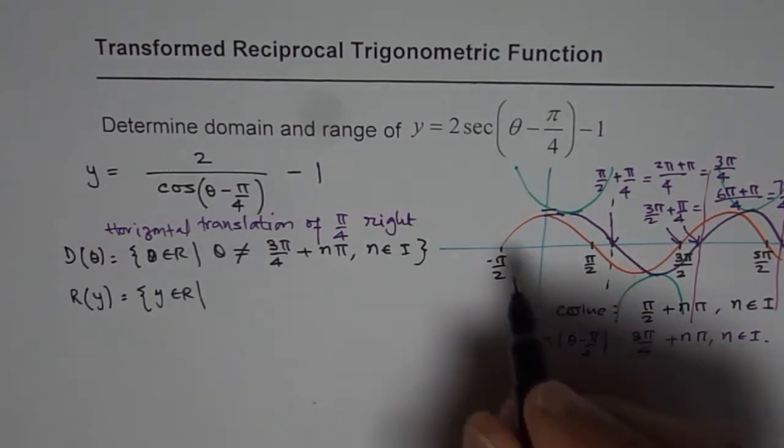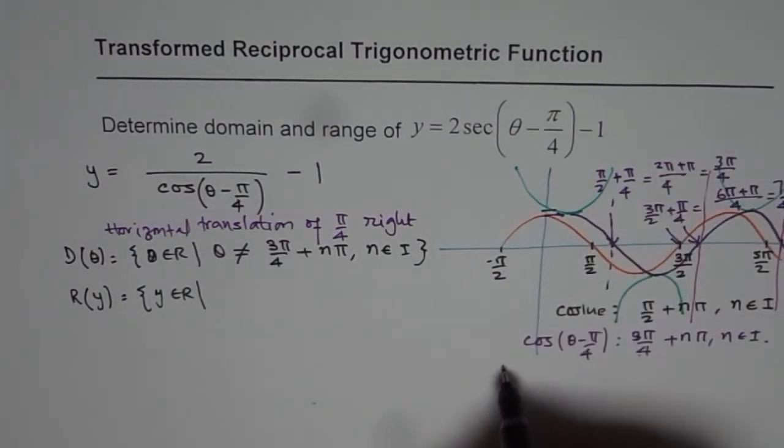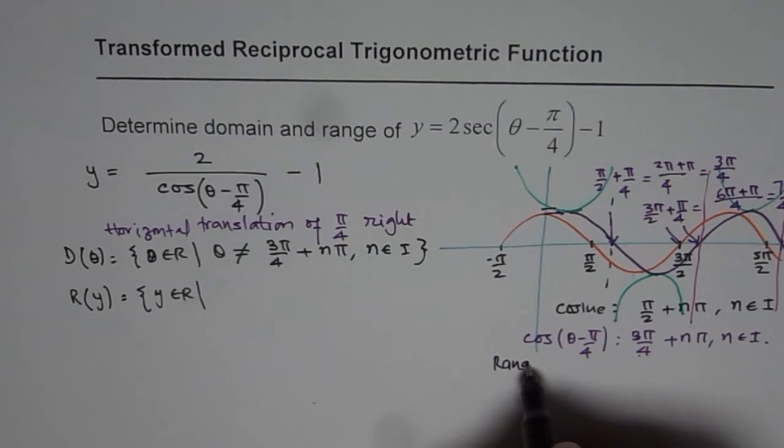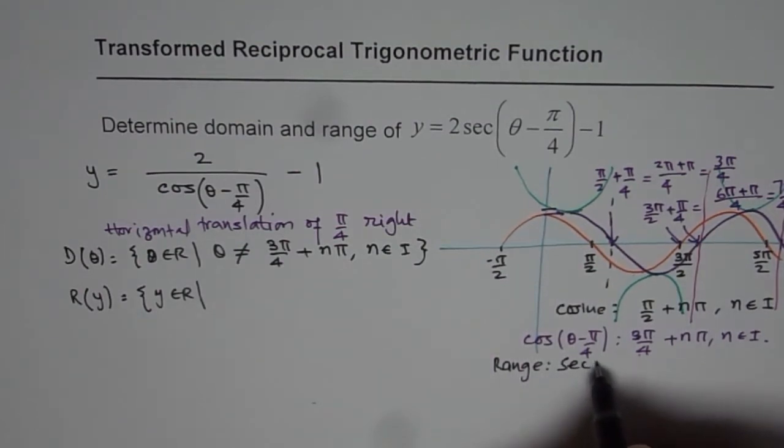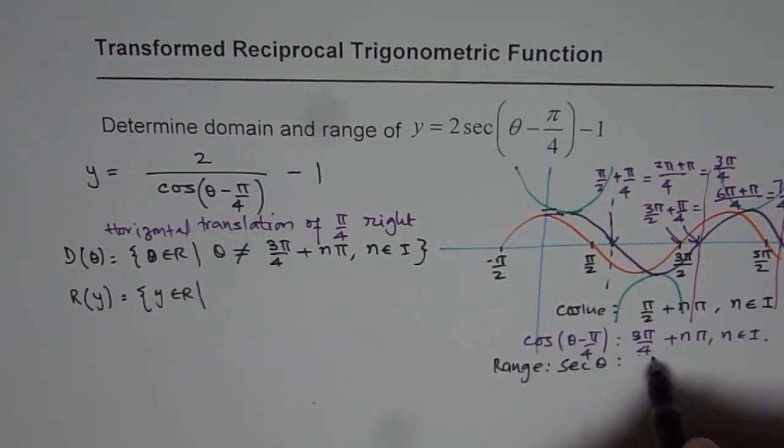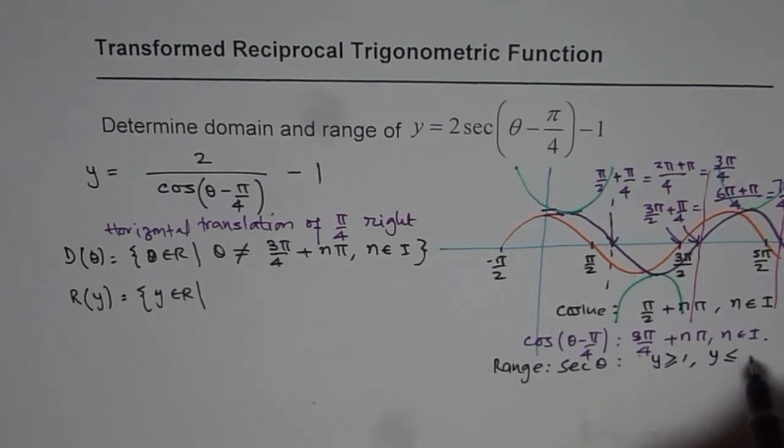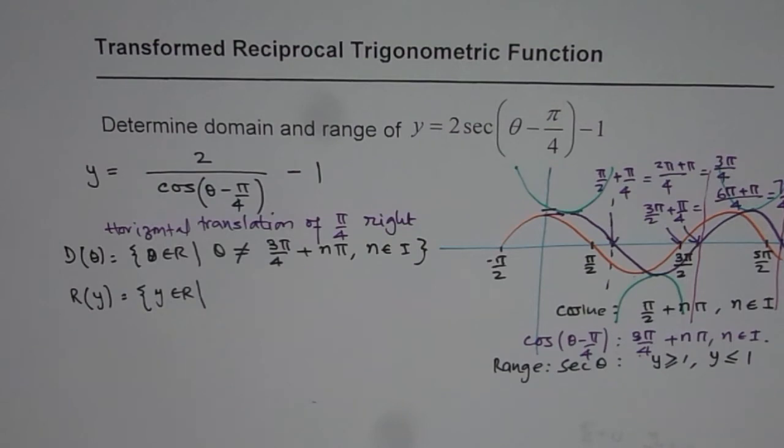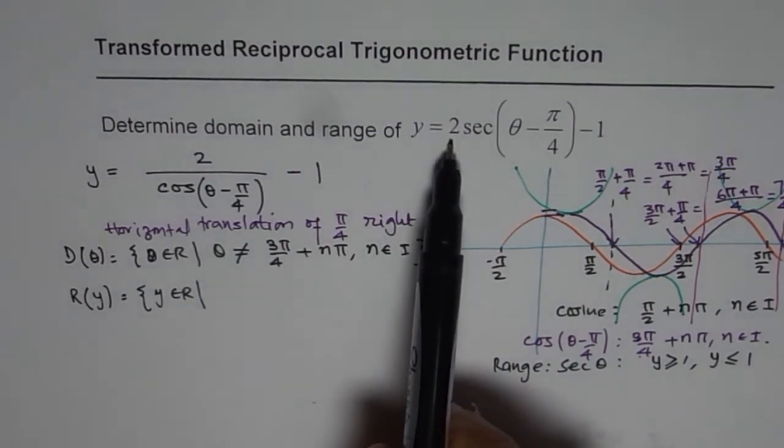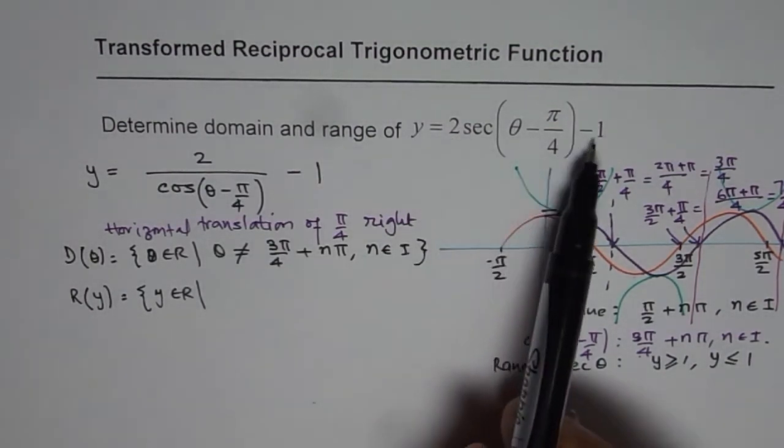So initially for the secant function, we have range for secant theta as y greater than equal to 1 or y less than equal to minus 1.